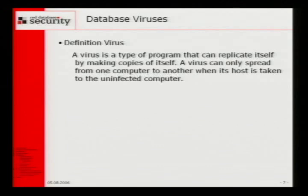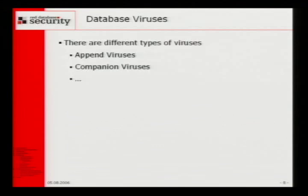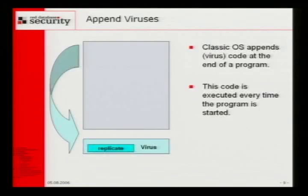Everybody in the room knows viruses replicate themselves. We have different types of viruses — append viruses, companion viruses — going back 15, 20 years ago. The classical append virus in the operating system world looked like this: we had executable code, then appended the virus code at the end, jumped from the beginning to the end, executed the code, and then jumped back.